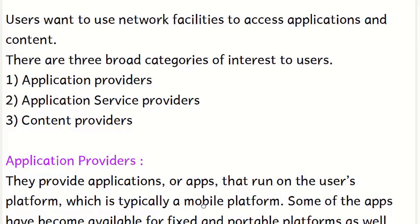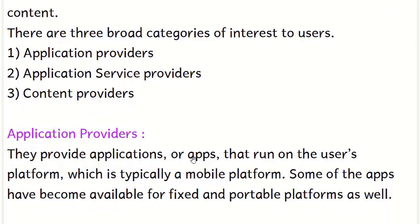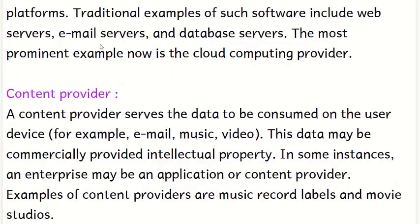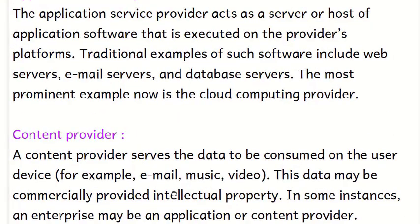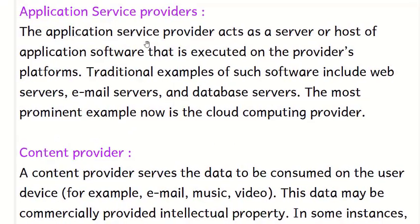The three categories are application providers, application service providers, and content providers. Application providers provide applications or apps that run on the user's platform — for example, apps on a mobile phone, and some apps are available for both fixed and portable platforms. Application service providers act as a server or host where the application is hosted, providing the platform for running the application.